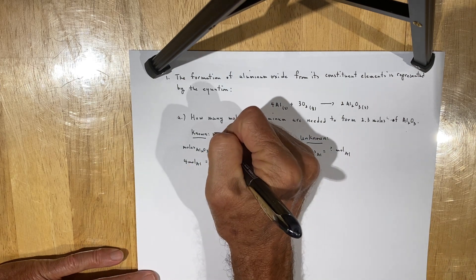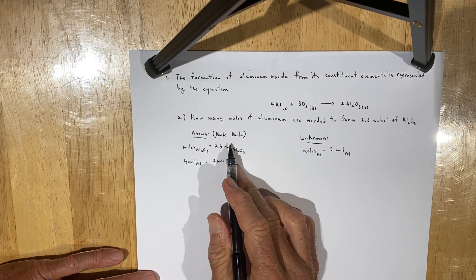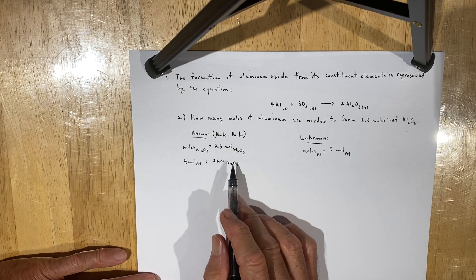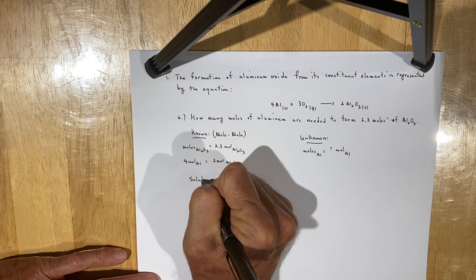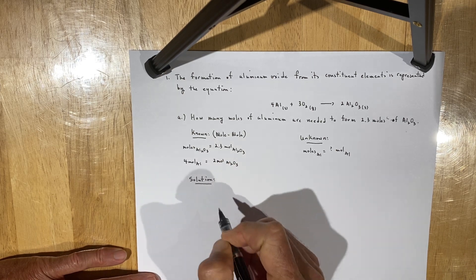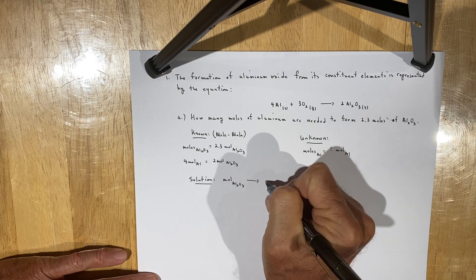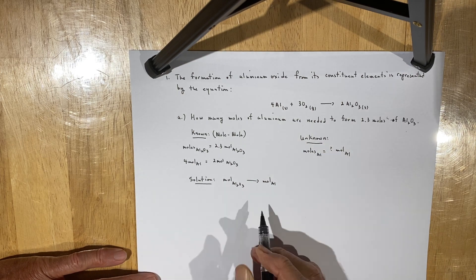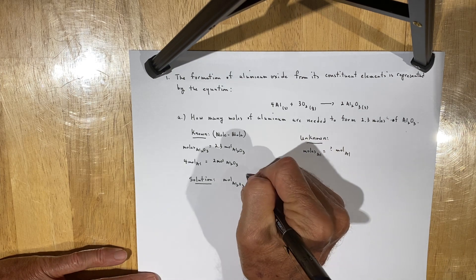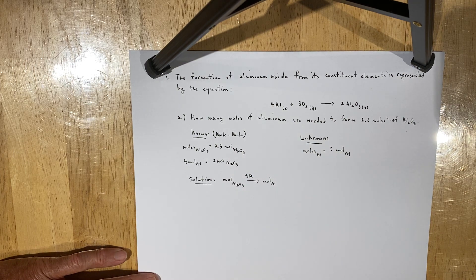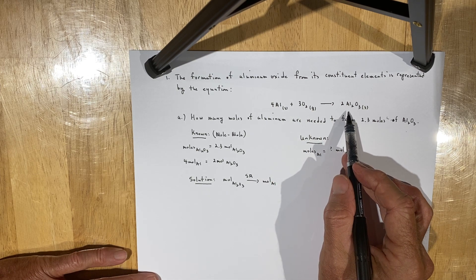This problem belongs to a general class of problems known as mole-mole problems, because you're converting moles of product to moles of reactant. To do so, you need to set up a solution, and your solution pathway involves converting moles of Al₂O₃ to moles of aluminum. The bridge between them is what we affectionately refer to as a stoichiometric ratio — that 4 moles of aluminum are required to be consumed to produce 2 moles of aluminum oxide.